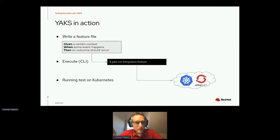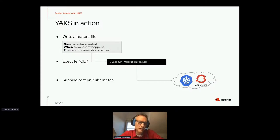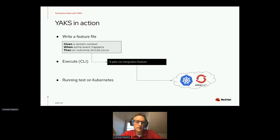YAKS in action: you write a feature file with the given/when/then syntax following BDD concepts, then run it with the YAKS CLI: 'yaks run integration.feature'. The YAKS CLI creates a custom resource of type test in the Kubernetes cluster. The YAKS operator running there translates the feature into a running Java environment and executes it with Cucumber. The goal was a very declarative approach — write one feature file and run tests in the Kubernetes cluster.